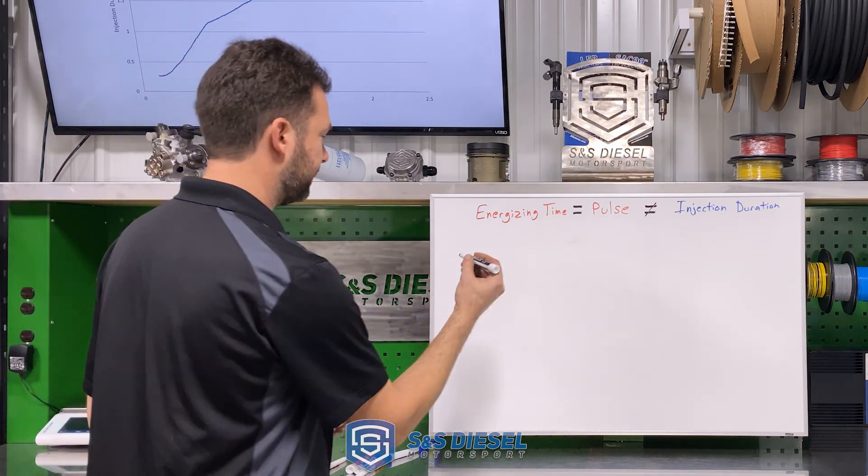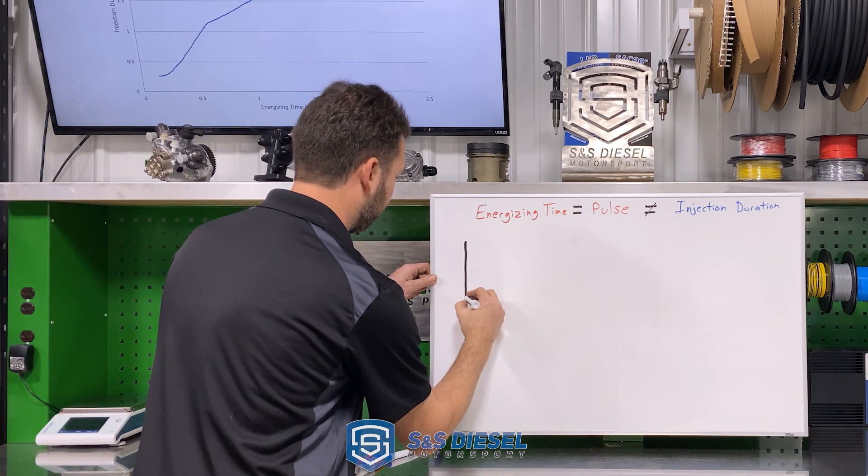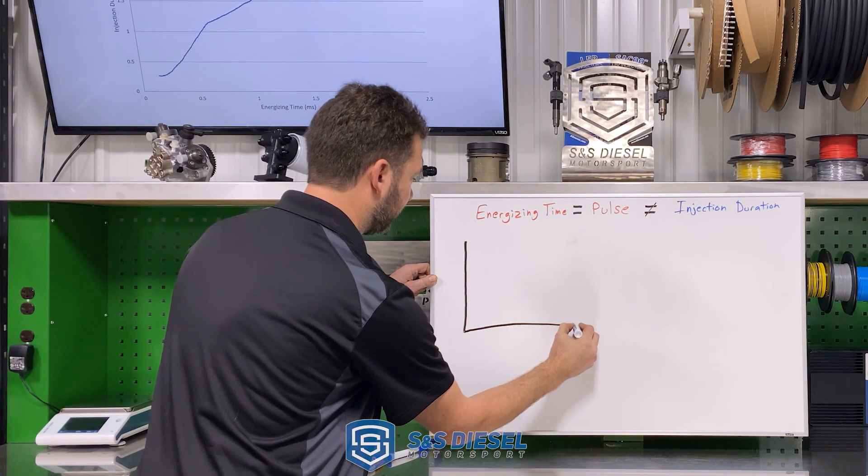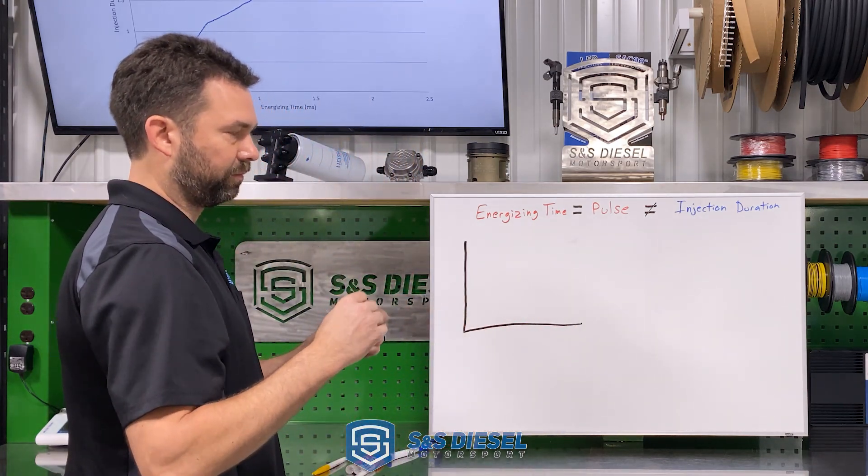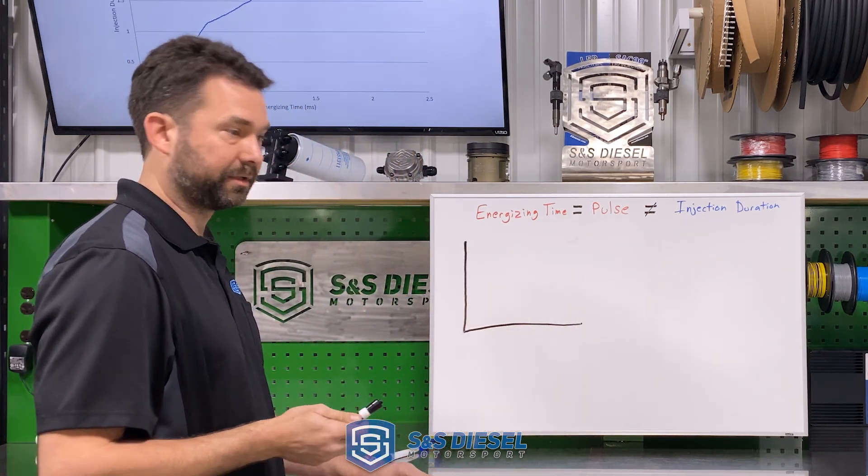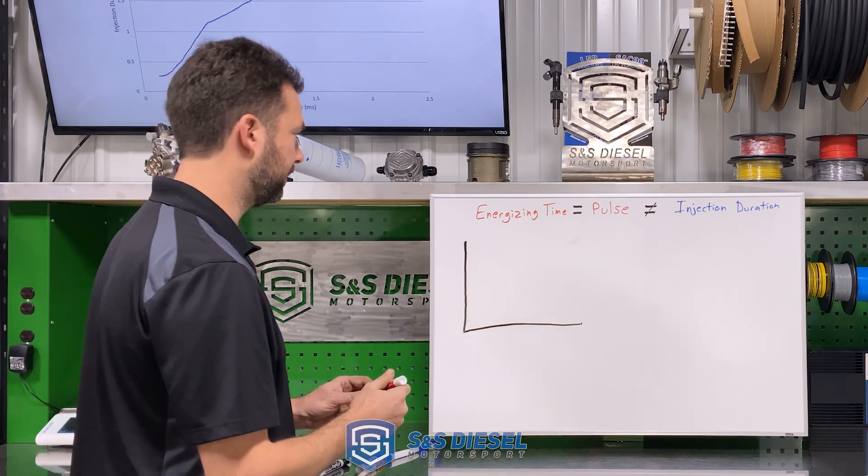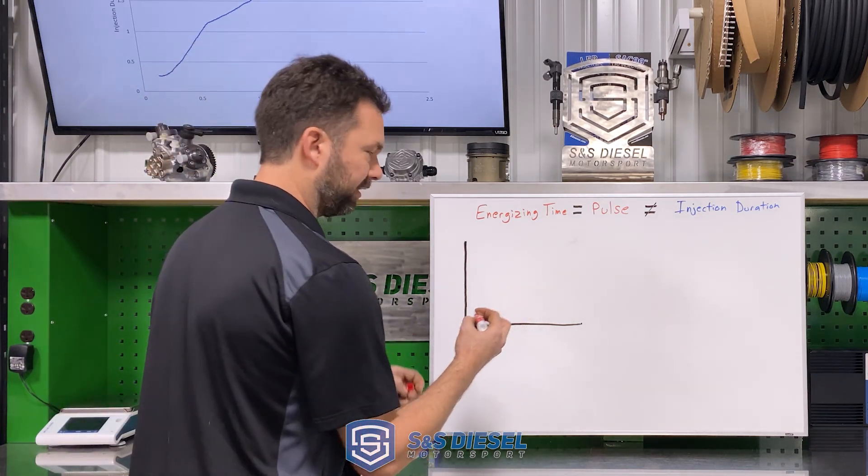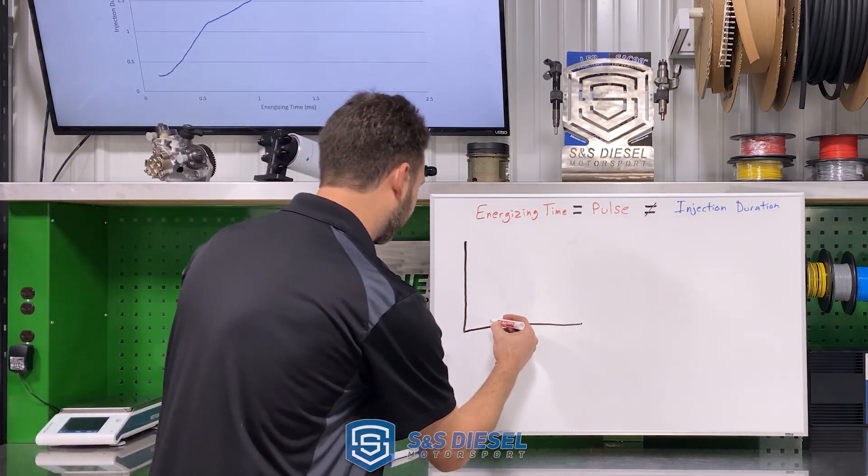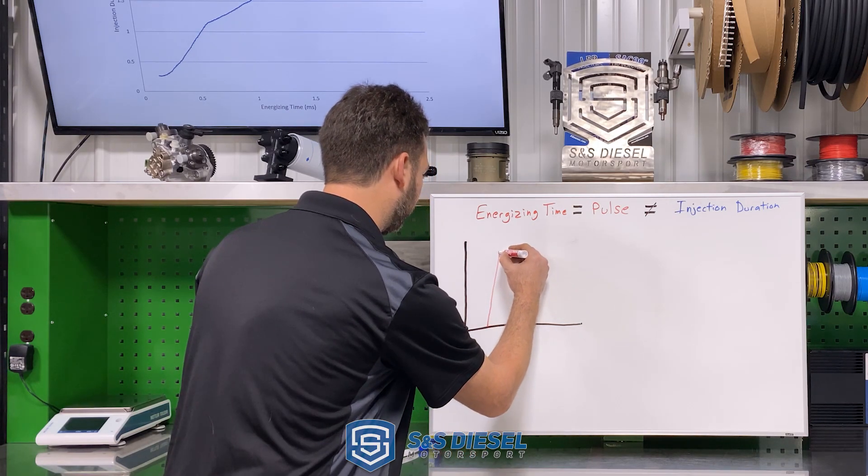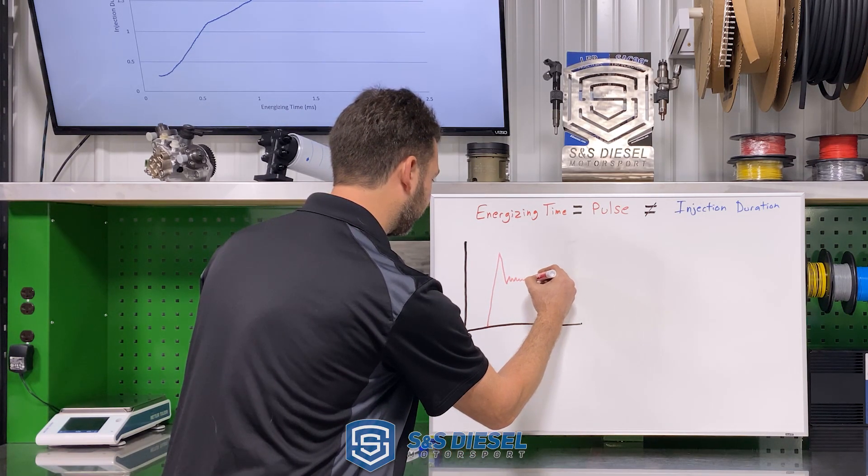First example today is going to be with the solenoid injector. This would be examples like a 5.9, 6.7 Cummins, LB7 through LMM Duramax. They're not all identical in how they function, but they're similar enough that we'll group them all into one basket here.